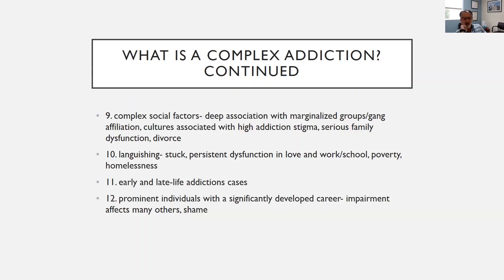Complex social factors also make cases more complex — deep association with a marginalized group or gang affiliation, being in a culture with high addiction stigma, family dysfunction or divorce. Some patients languish, stuck in an unpleasant situation with persistent dysfunction in relationships, work, school, poverty, or homelessness. Early life and late life addiction cases are more complex — I've treated patients as young as 13 or 14 in Baltimore already in the throes of addiction. Prominent individuals with significantly developed careers also present more complexity, partly because their illness affects so many others and the incidence of shame is so much more prominent.